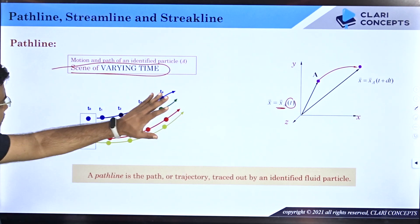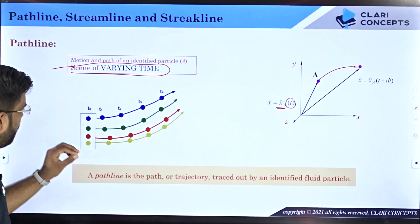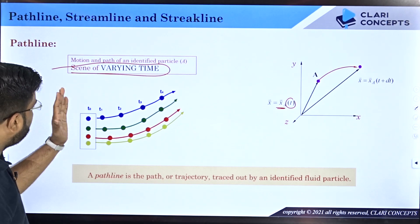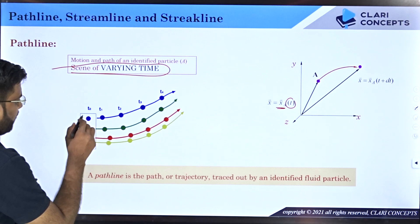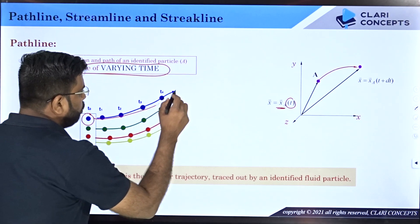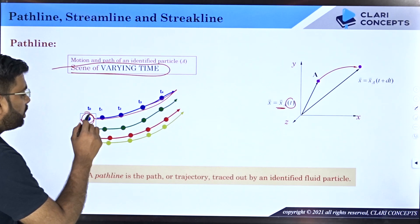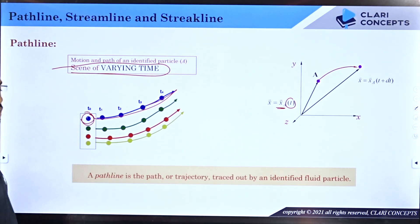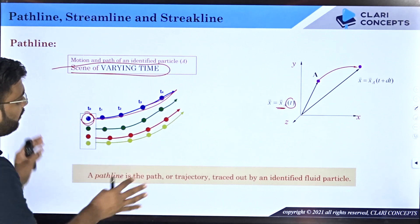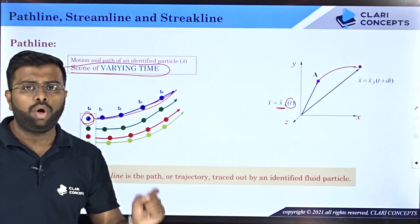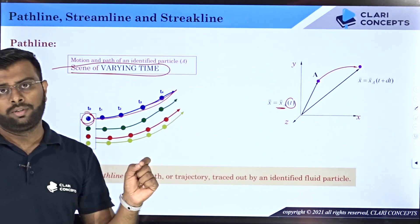Let me give you an example. There are four different particles identified in the fluid domain, all of them traveling from t0, t1, t2 up to t4. The path traced by the blue color particle is the blue line — this blue color line is called the pathline of the blue color particle which was found at t0 at that particular location. Similarly for the green, red, and yellow particles. Pathline basically refers to the path or trajectory followed by an individual particle in space.